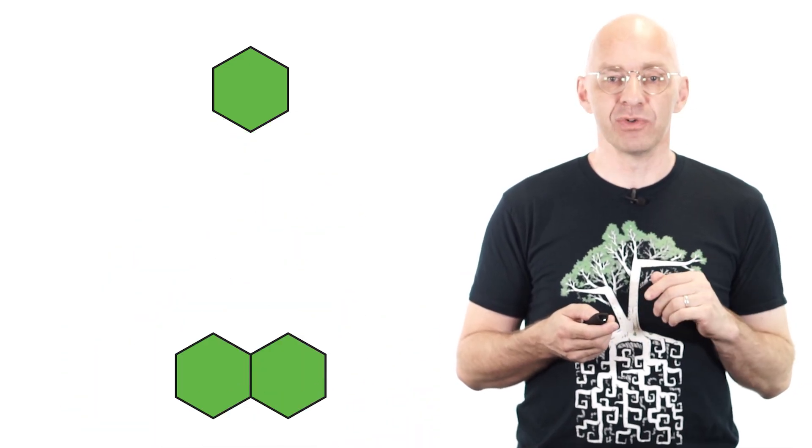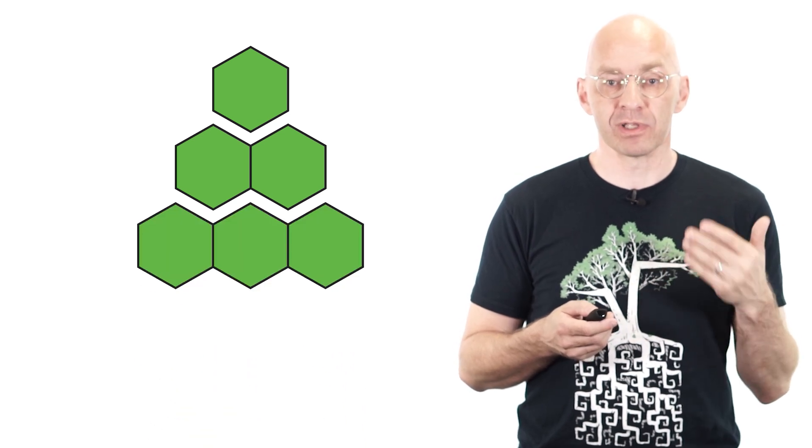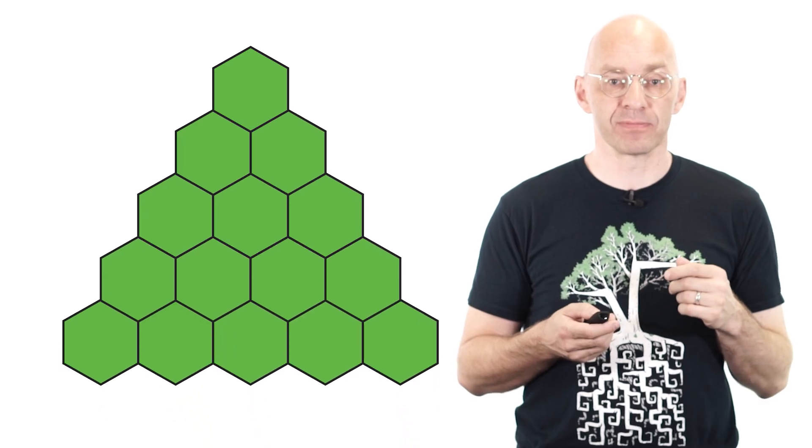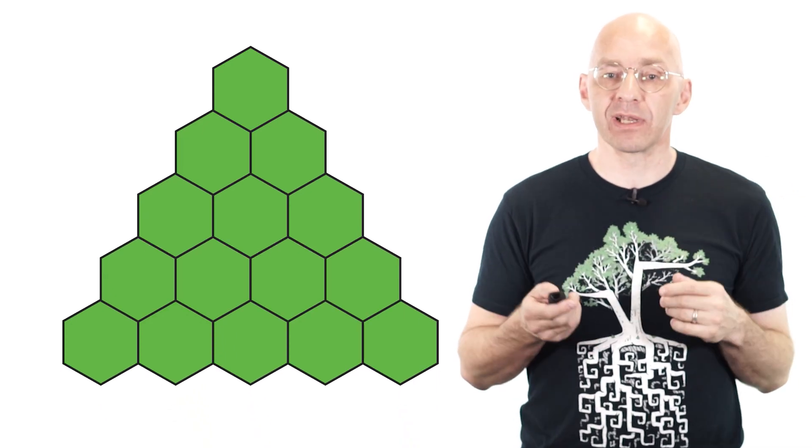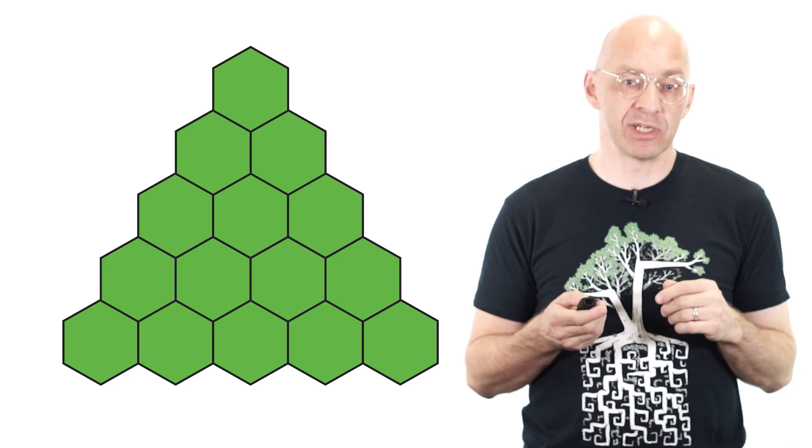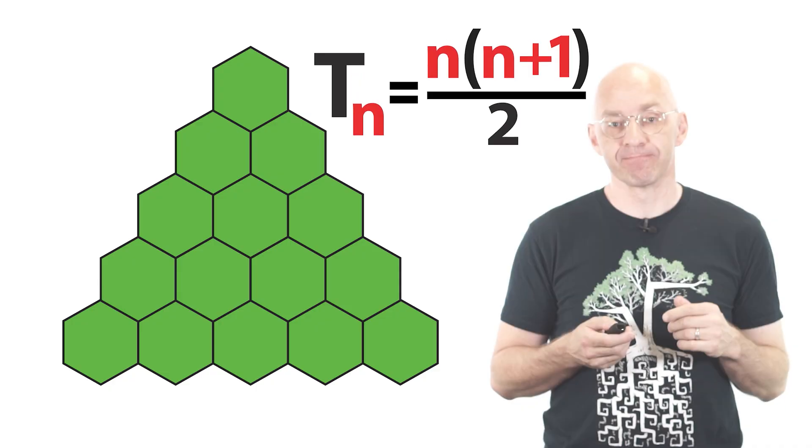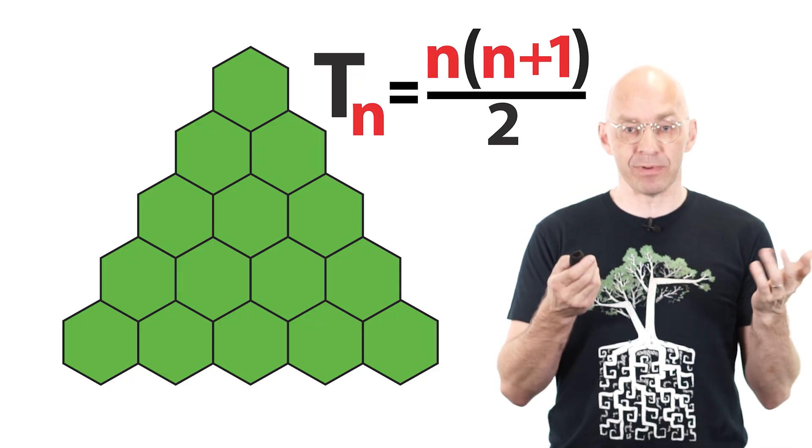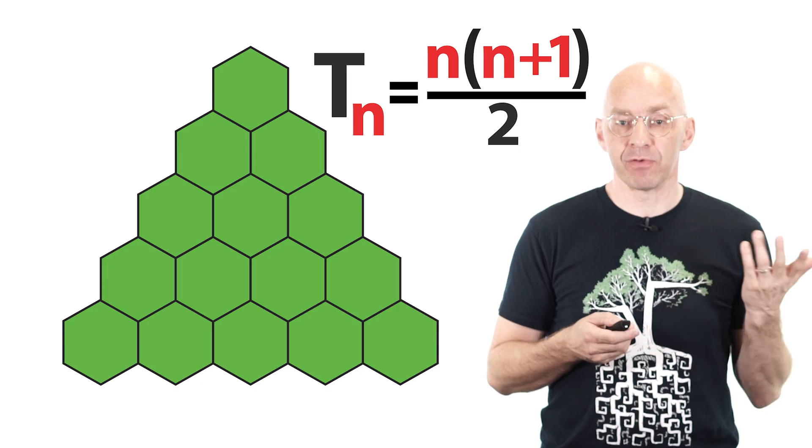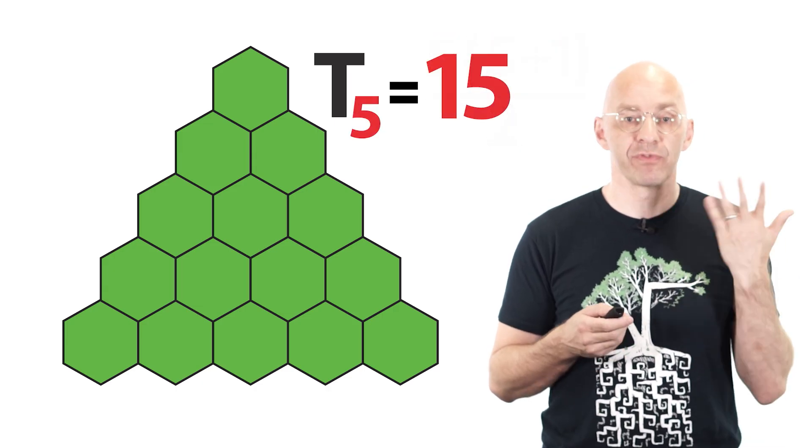Anyway, the number of hexagons in a triangular triangle of which n is called the nth triangular number. So t1 is just 1, t2 is 1 plus 2 equals 3, t3 is 1 plus 2 plus 3 equals 6 and so on. And so the nth triangular number tn is just the sum of the first n positive integers which as many of you will know is equal to n times n plus 1 divided by 2. So for example t5, the number of hexagons in this triangular triangle is equal to 15.